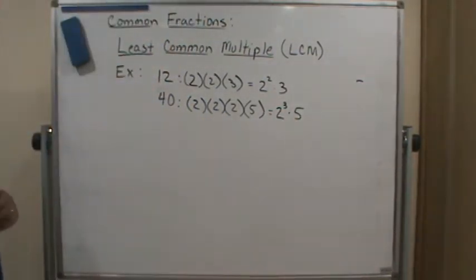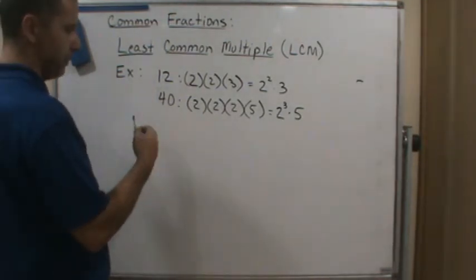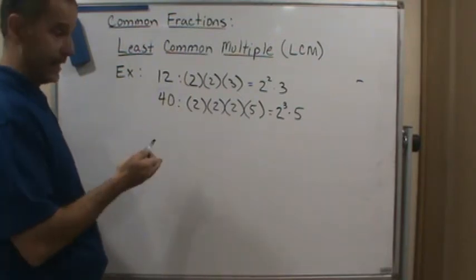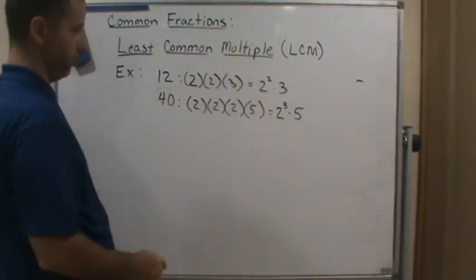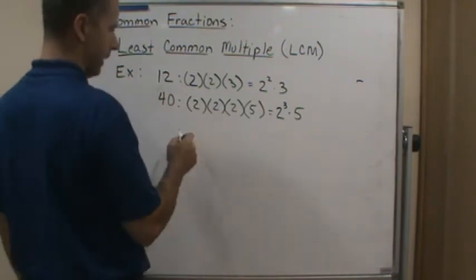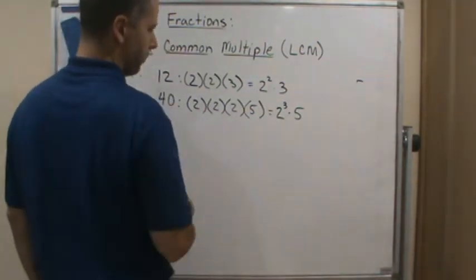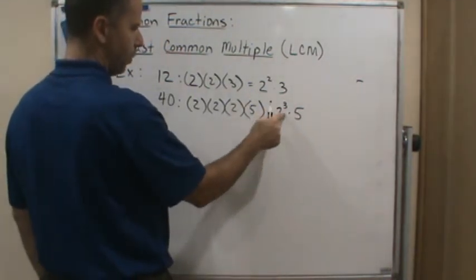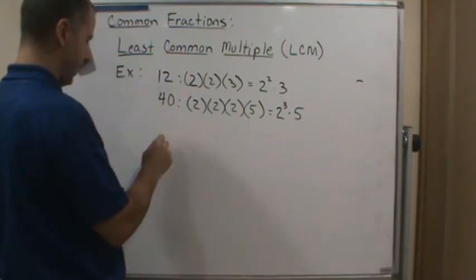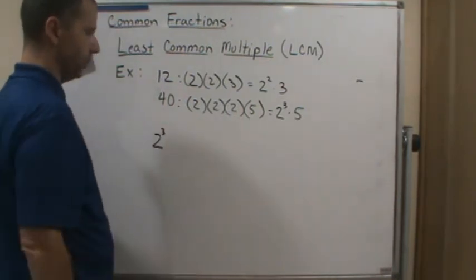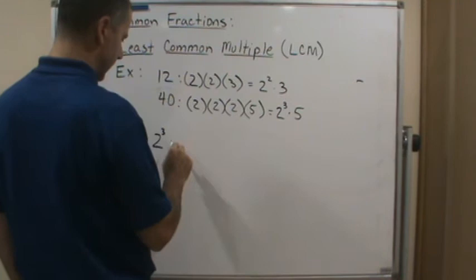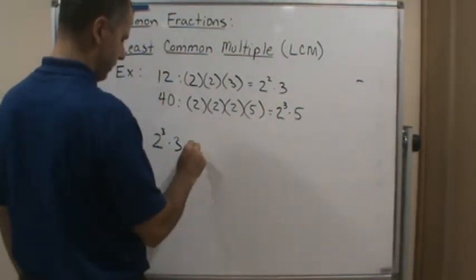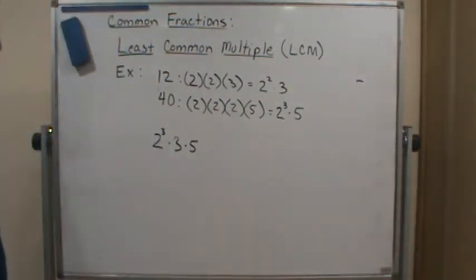Now what I'm going to do is list out the prime factors that I see between the two. So, 2 is common. I'm going to start with the smallest one, but it's common, so I want the one with the bigger exponent in this case, which is 2 cubed. And then also I see a 3, and I see a 5. So I'm going to take those and multiply them together.